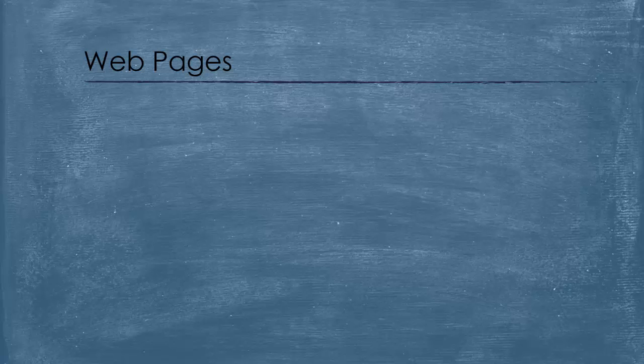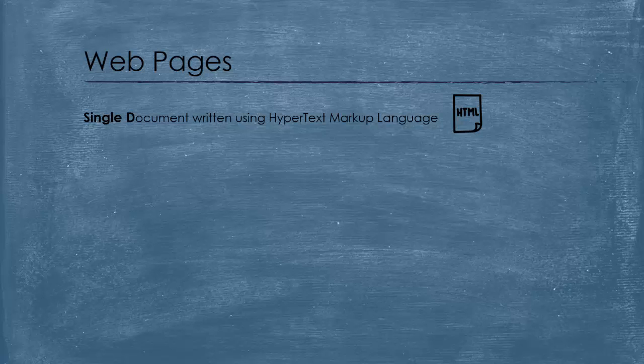What is a web page? A web page is a single document that is written using hypertext markup language and it's accessible via the web through the internet using a web browser. I recommend watching my video about the web and the internet if you are not familiar with the two concepts.